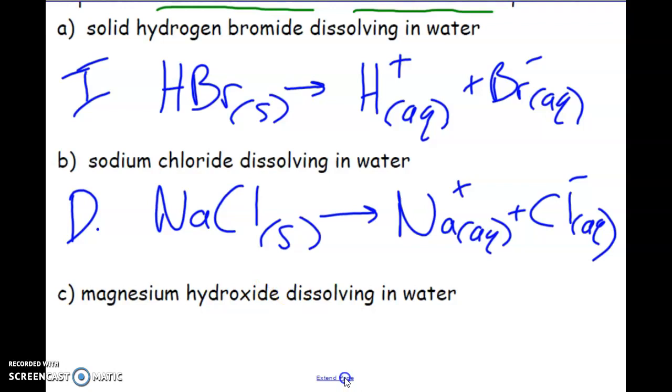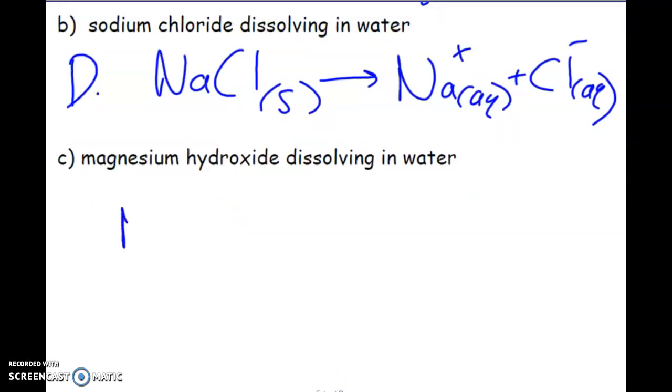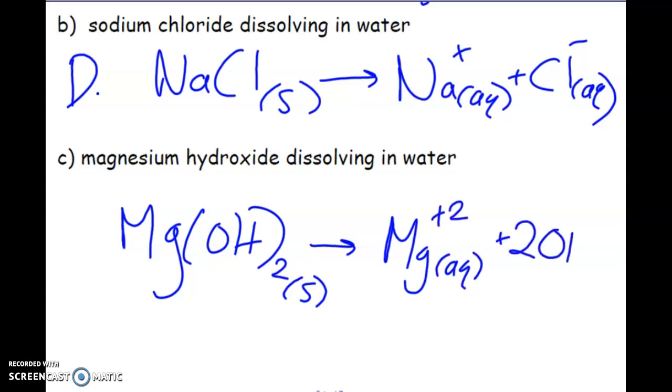Then we have magnesium hydroxide dissolving in water. Again, an ionic compound is always solid at room temperature. Once this is dissolved, we have one magnesium ion and two hydroxide ions. Again, this is classified as dissociation because it's simply taking that crystal lattice shape of our ionic compound and breaking apart the ions. Acids will ionize, bases will dissociate. Pardon me, I said bases dissociate, which is true, but any ionic compound. So sodium chloride is not an acid or a base, but it's still able to dissociate.